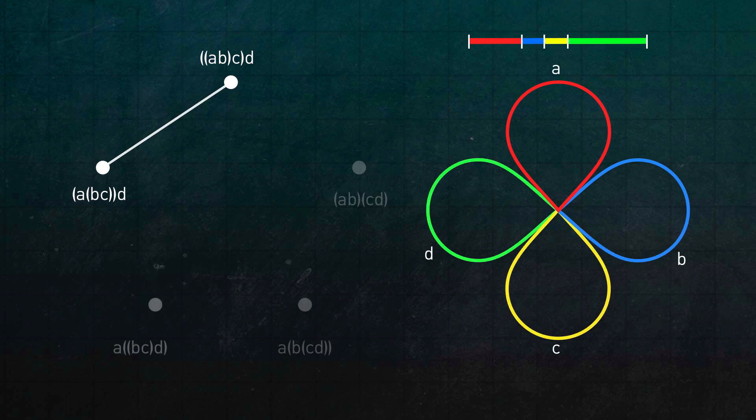A similar homotopy gets us from here to here, and another one gets us from here to here. So there are five total vertices, and four of them can be connected by this orange path. But here's what's cool.